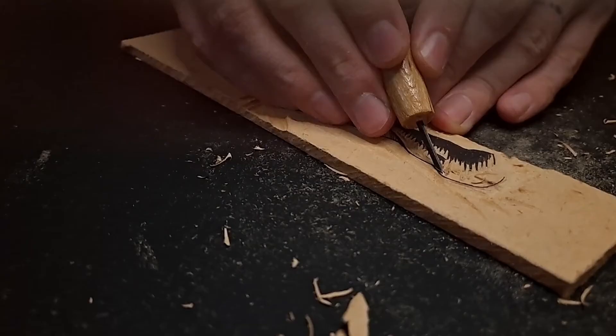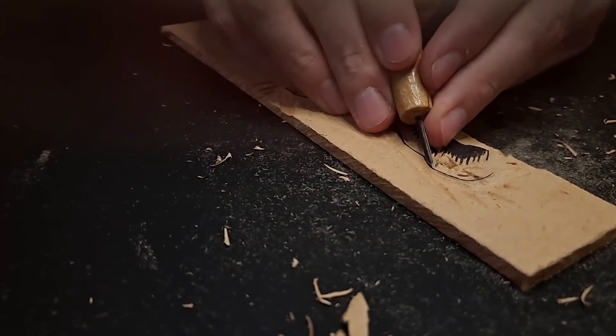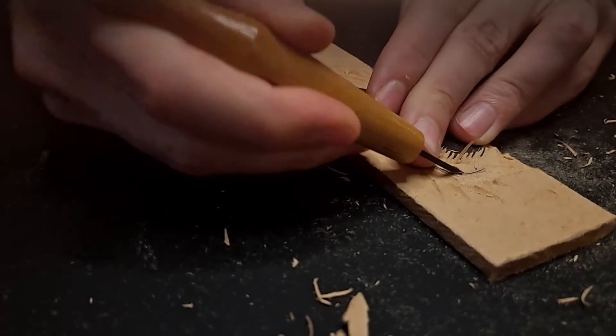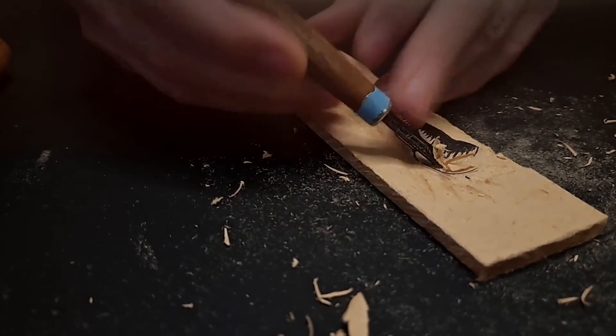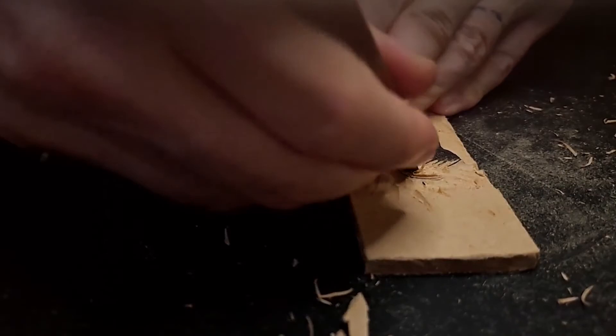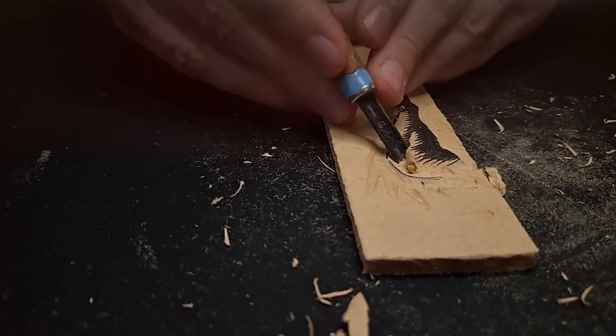And it's fairly simple like that. So after this is all carved, just go around the inside of your line and get rid of this with the big U gouge. It looks just the same.